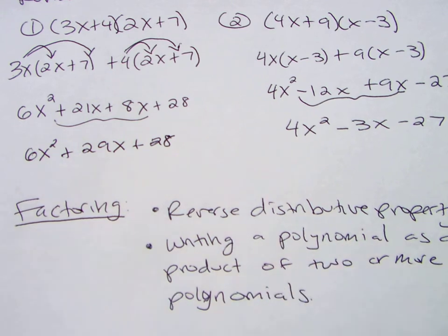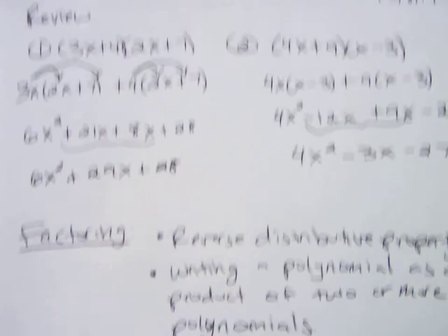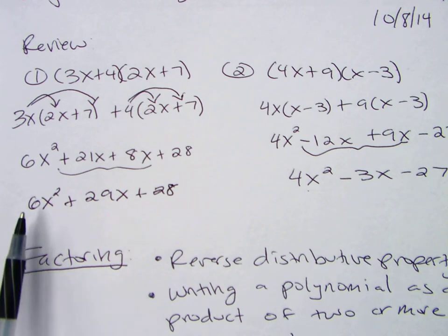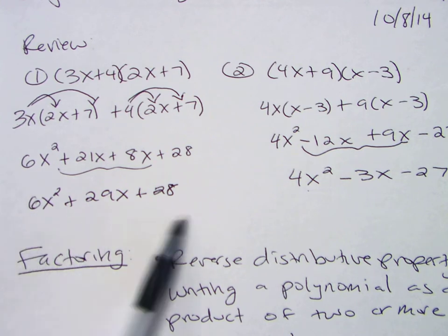Factoring, writing something as a product. So if I gave you 4x squared minus 3x minus 27, to factor would be go backwards. This is a product. Okay? So it's backwards distributive property. Instead of having a product multiplying out, here's your trinomial, write it this way. So notice in the two problems we just did. You have that 6 in front of x squared. Can you divide everything by 6 to factor it? No.